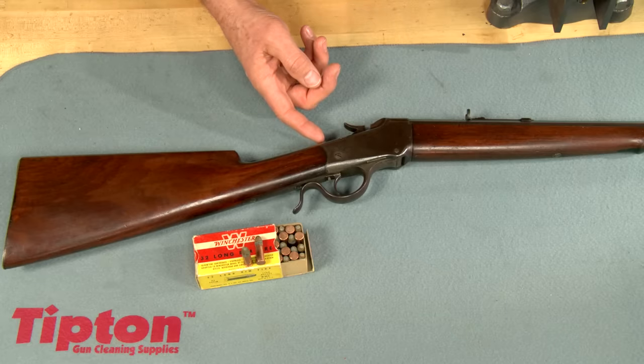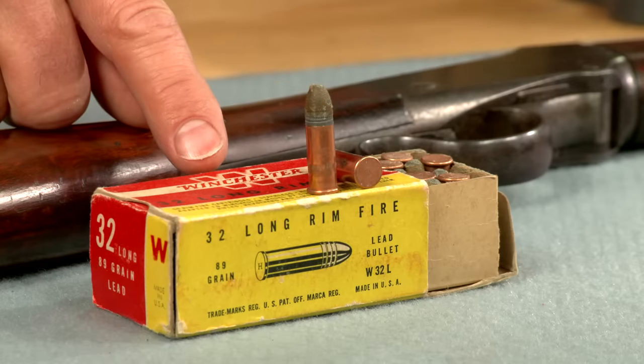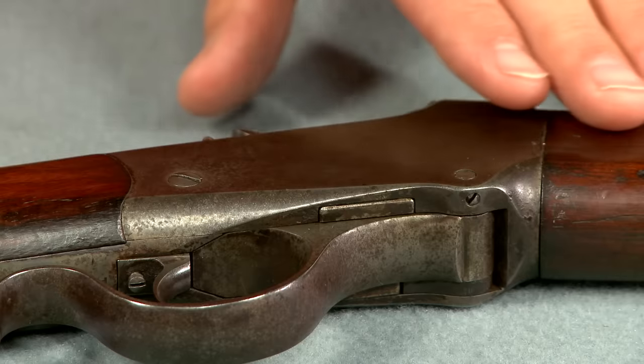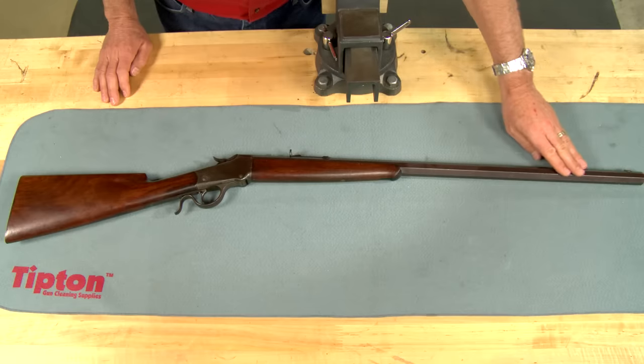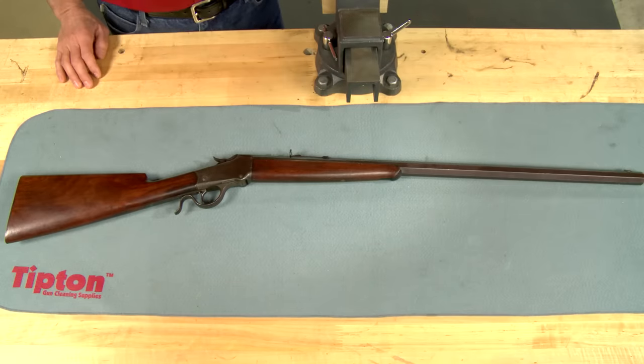Here's an old Winchester 1885 low wall in the long obsolete caliber of 32 rimfire. This gun was made in 1891 and the bore is badly pitted. Collectors might call this an old brown gun as all of the original finish has turned brown and not much collector's value remains.